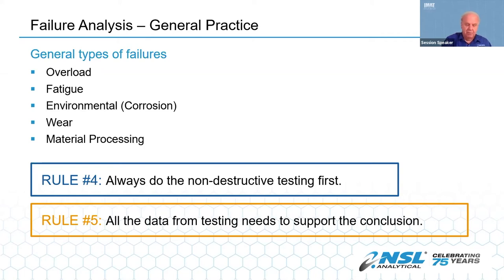Now we come to rule four: always do the non-destructive testing first. There's no way to go back from destructive testing, and almost always you only get one chance with a part, so you need to be sure you get all the information you can before you destroy the part. And rule number five: all the data from testing needs to fit the conclusion. You cannot pick and choose from the data that you get. Things are not always as they first appear.